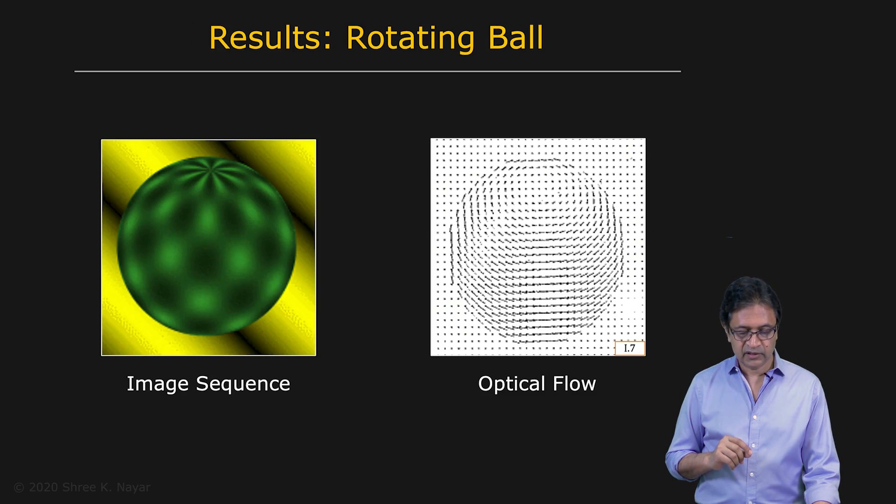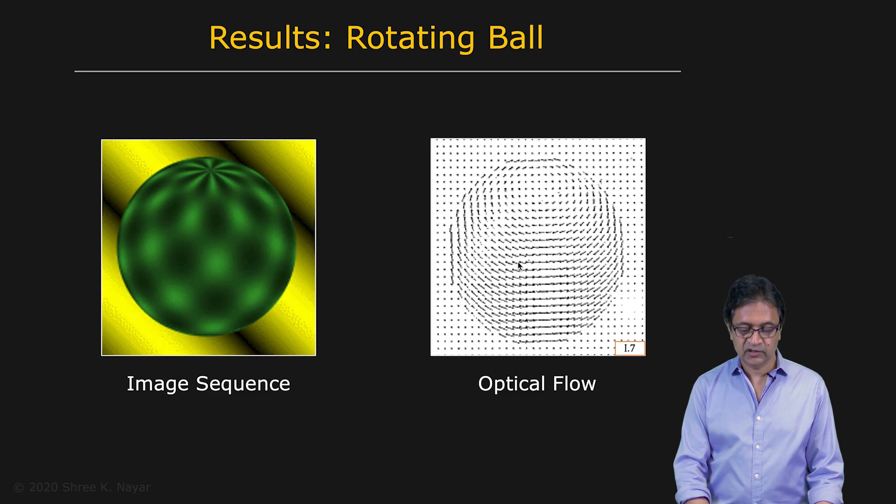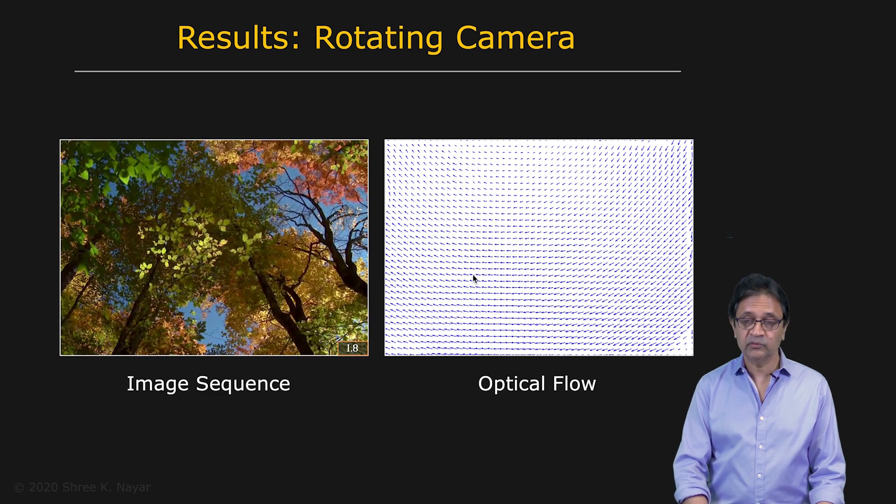Here's another interesting example, which has rotation in it. And you can see the optical flow vectors in this case, consistent with the motion. Here's another one. And again, there is sort of a rotation field right here. So it works pretty well.